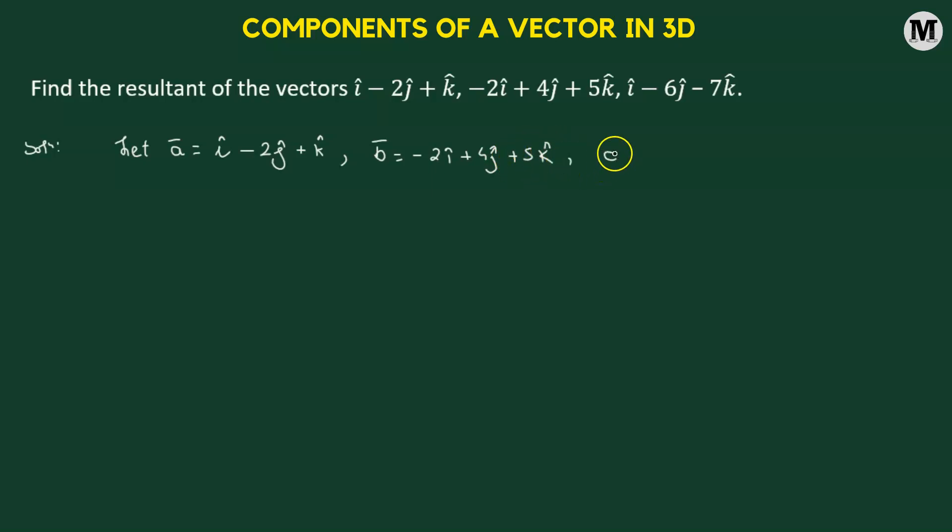C vector is represented by I cap minus 6J cap minus 7K cap. Now finding the resultant of these three vectors means simply adding them up. Let's add them up.